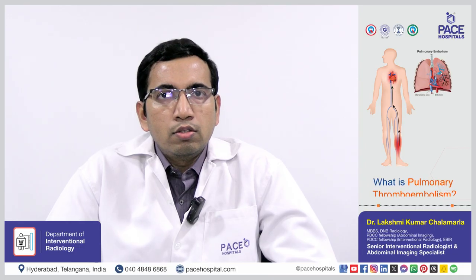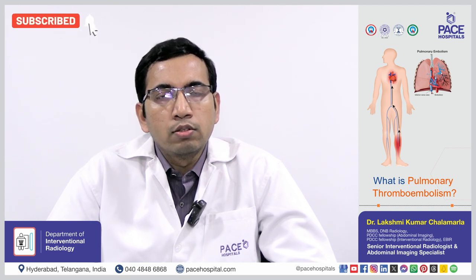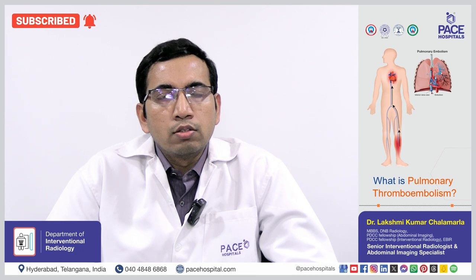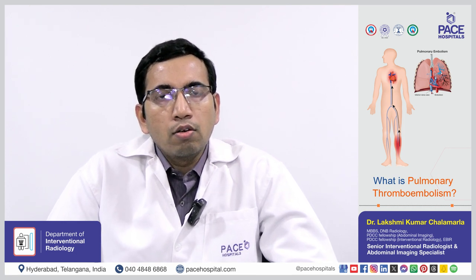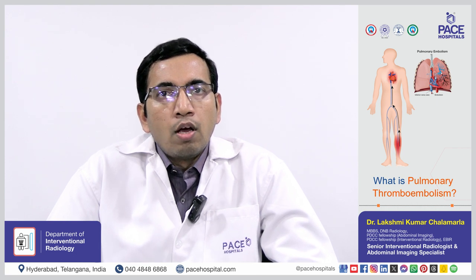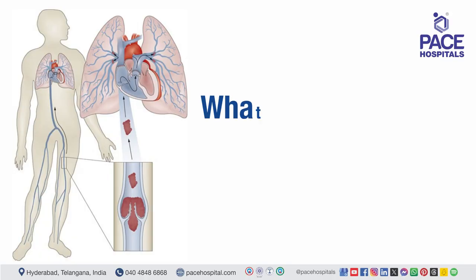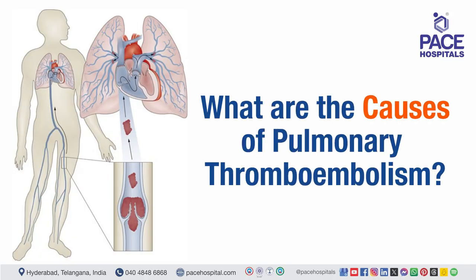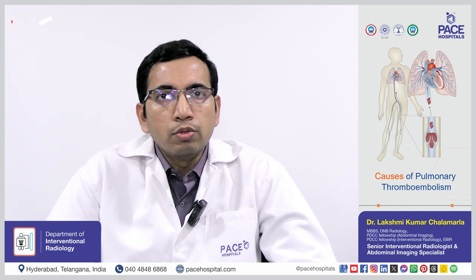This condition has three words: pulmonary, thrombus, and embolus. Pulmonary means lungs, thrombus means a blood clot, embolus means blocking a blood vessel — that is, an artery. So if a blood clot blocks the lung arteries, that is called pulmonary thromboembolism.